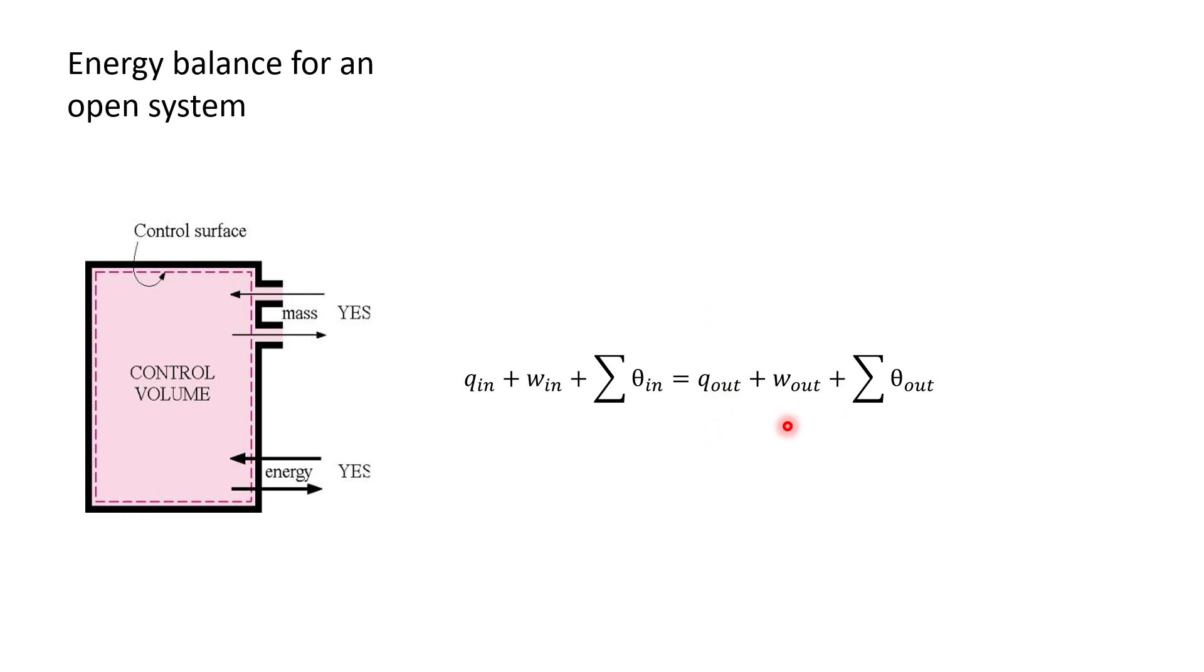the heat flow in plus the work that flow in plus the total energy contained by the matter that flow in equal to the one that goes out. The heat goes out, work out, and the total energy that goes out. This is a basic energy balance equation. Now we key in every term in the energy equation and substitute this term with the full term. We get the universal energy balance equation in the open system.